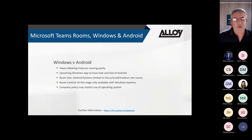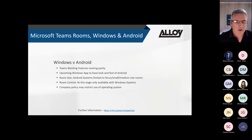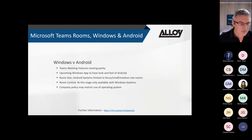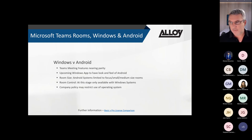The Android devices have come a long way over the years. Initially, what used to be called collaboration bars were single screen, 720p, with no content share - really suited for small huddle room solutions. Now, Android devices have come a long way, and the features between an Android and a Windows Teams Room device are nearing parity.